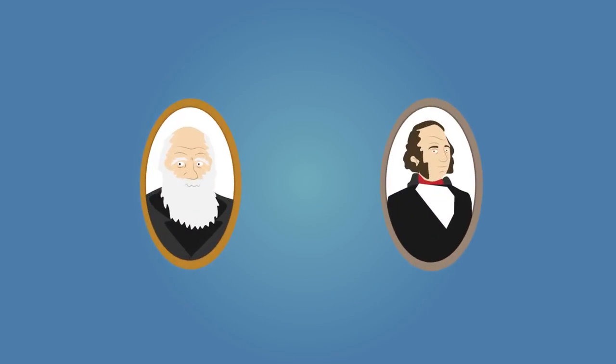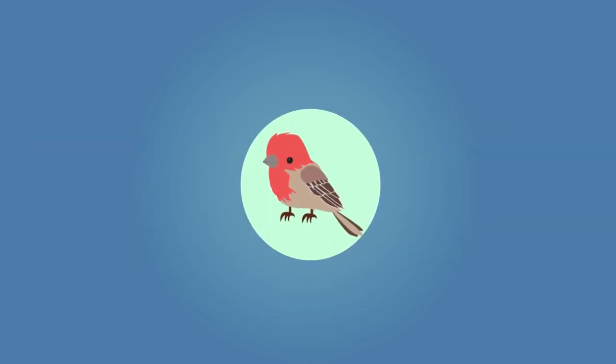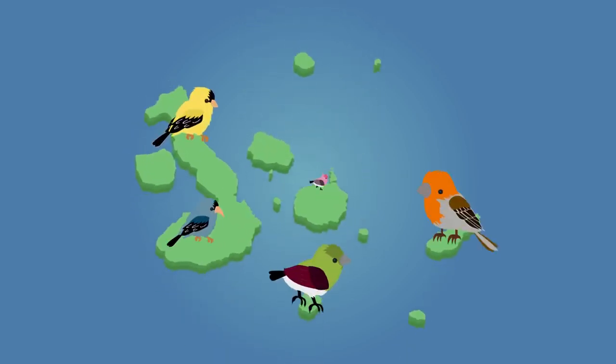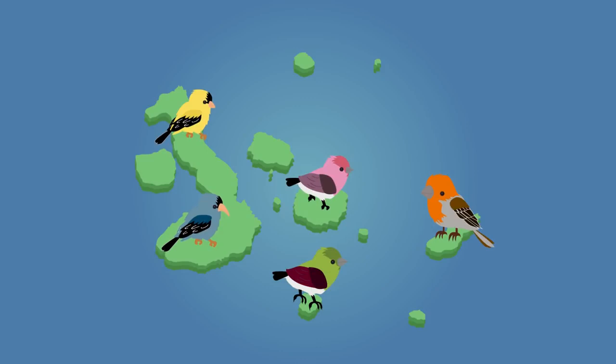The scientists observed that the birds were all similar to a single type of finch found on mainland South America, suggesting that these mainland finches had originally colonized the island. However, the Galapagos finches were all slightly different from the original mainland species, and they were also different from each other.